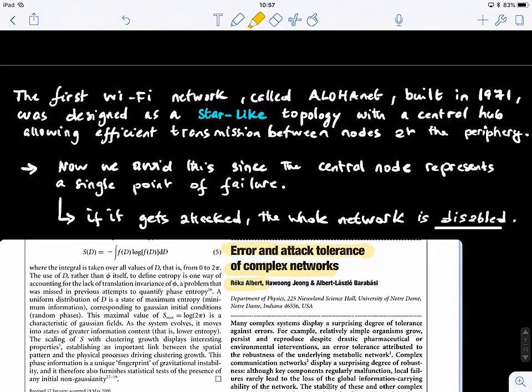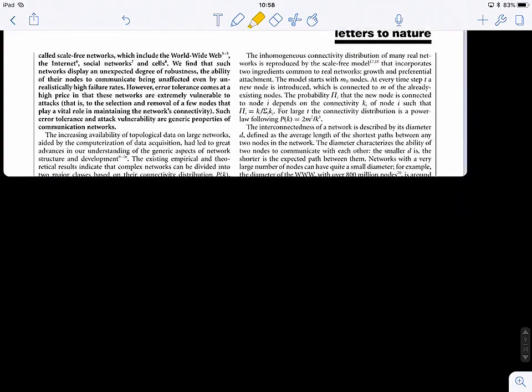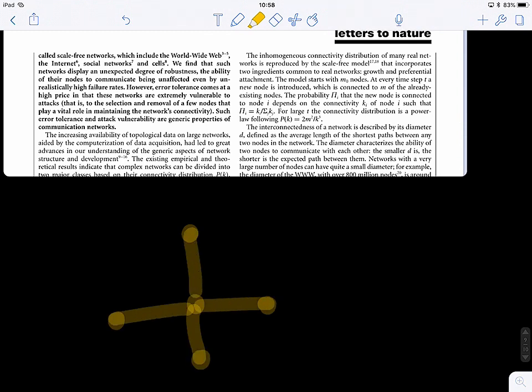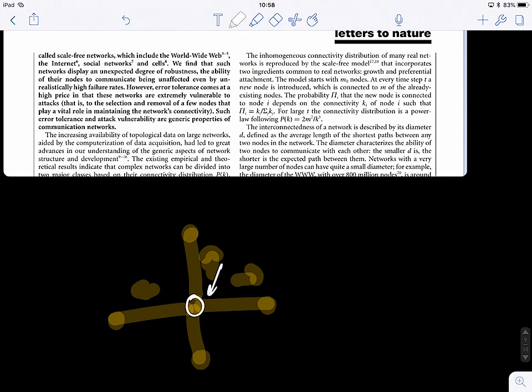So if you guys, maybe you don't recall this, but the first Wi-Fi was called Aloha Net and it was built in 1971. And it was like a star-like network. If you guys remember, star-like is like this. So what you have, you have a hub and the hub basically flows information to all other nodes. So what's going to happen to this network if the hub gets attacked?